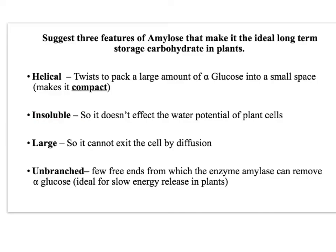It's insoluble, so it doesn't affect the water potential of plant cells — whereas storing it as glucose would lower the water potential inside the cell, which would have terrible consequences for the plant. It's large, so it can't exit by diffusion out of the cell, meaning it actually stays inside the cell. And it's unbranched, which means it's quite a slow release source of alpha glucose.